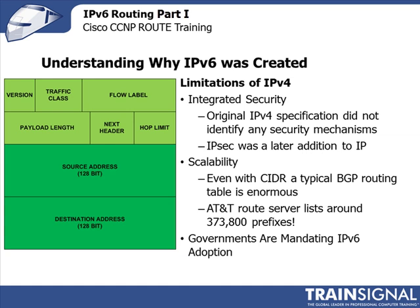Another limitation is scalability. Even with CIDR, a typical BGP routing table is enormous. As we looked at in our BGP lesson, you don't have to take all internet routes into your internet router — you may be able to take a default route or partial routes — but a full internet routing table is enormous. I checked the AT&T route server and there were 373,800 prefixes, generally slash 24 and above, which is still an enormous amount of addresses to process. Also, a number of government agencies around the world and the U.S. have been mandating IP version 6 adoption. It hasn't happened as quickly as everybody would expect, but it's being pushed by regulatory agencies.